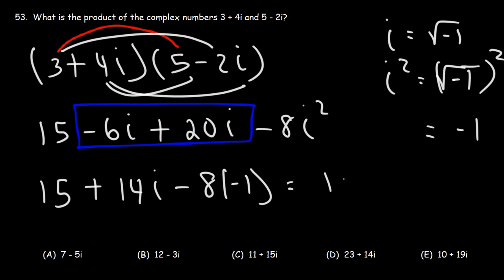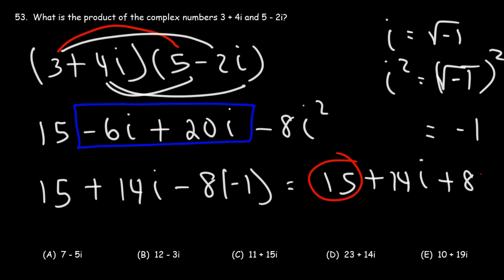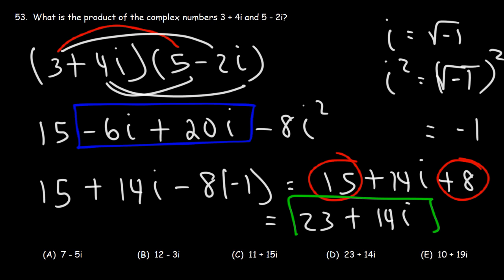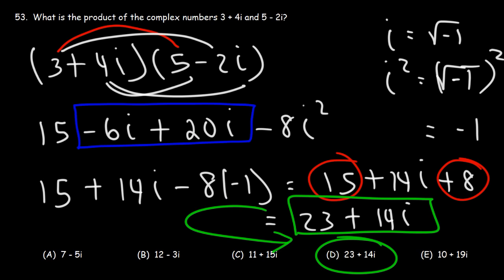So this becomes 15 plus 14i plus 8. Let's add those two numbers: 15 plus 8 is 23. So the answer is 23 plus 14i, which corresponds to answer choice D.